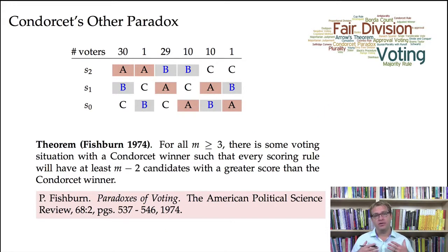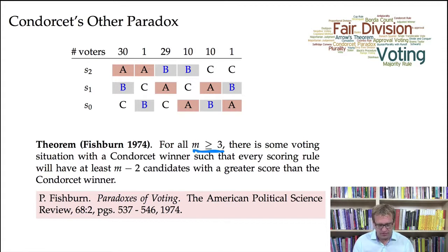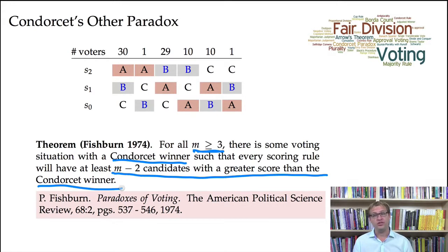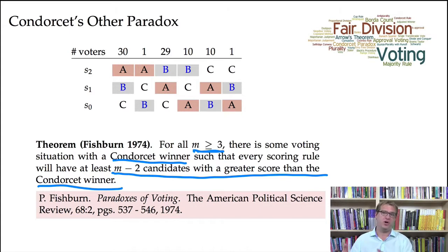Peter Fishburne proved a very general theorem that says for all M greater than or equal to 3 — so for all numbers of candidates greater than or equal to 3 — there is a voting situation with a Condorcet winner, but every scoring rule will have at least M minus 2 candidates with a greater score than the Condorcet winner. This shows how bad it can get: with M candidates, there can always exist a situation in which the Condorcet winner exists, but M minus 2 of the candidates — almost all of them — have a score greater than the Condorcet winner. This is our first example of a voting paradox: Condorcet's other paradox.